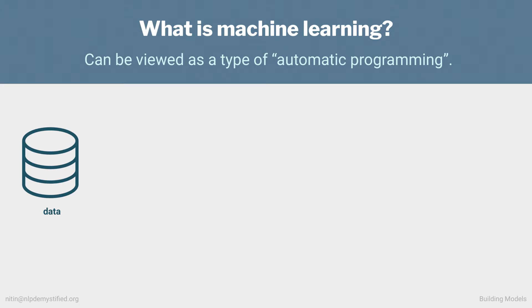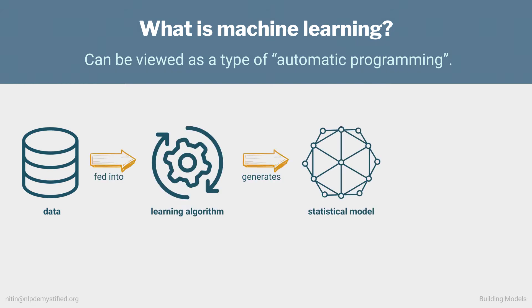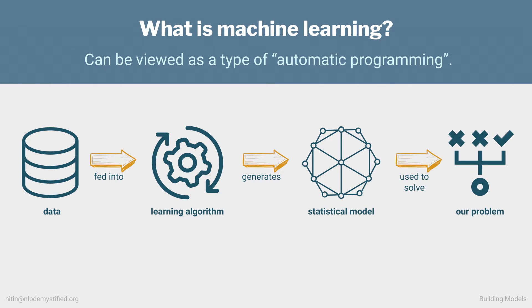So we bring in machine learning. What is machine learning ultimately? It's solving a problem by taking a dataset, algorithmically building a statistical model from that dataset, and then using that model to solve the actual problem we're interested in. I emphasize algorithmically because in this regard, ML can be viewed as a type of automatic programming, and we'll clarify this further in a moment.